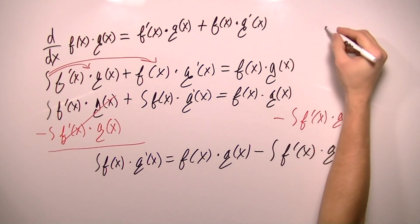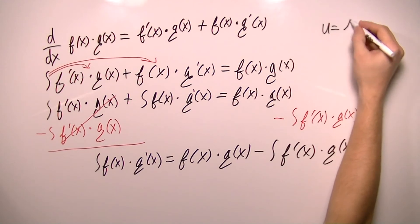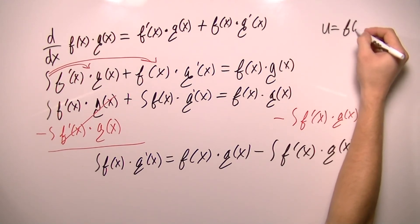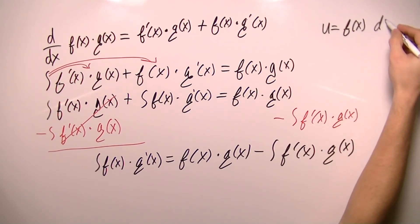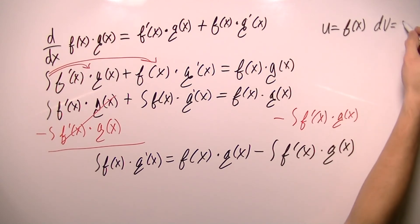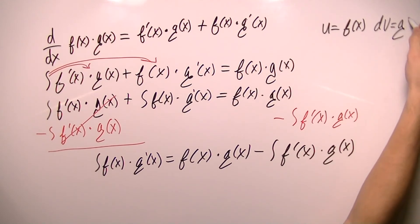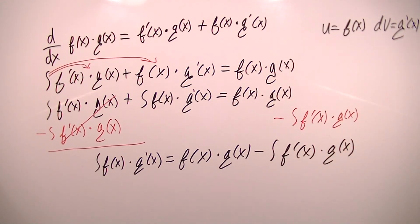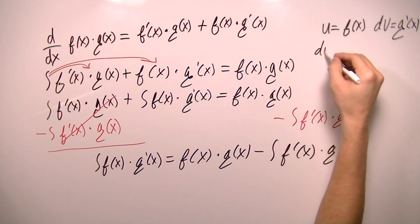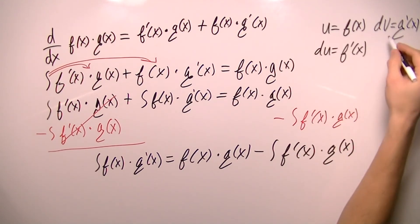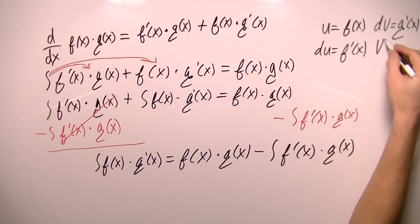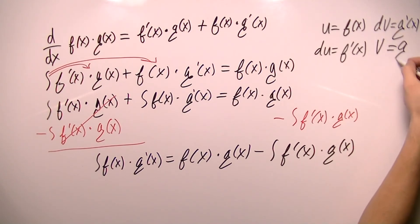Now I'm going to make a substitution and say that u equals f(x) and dv equals g′(x)·dx, so that du is equal to f′(x)·dx, and the integral of dv equals v, which is g(x).